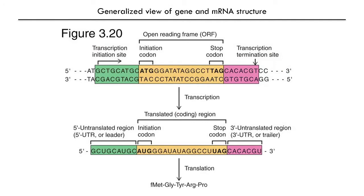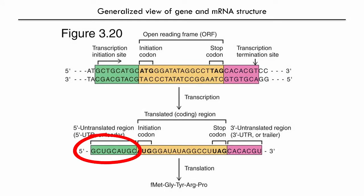Once again, one strand of DNA acts as the template. The other, non-template strand, has the same sense as the transcript. Only part of the sequence transcribed into RNA is eventually translated into protein. In addition to the coding region are the 5' untranslated region, or 5' UTR, and the 3' untranslated region, or 3' UTR.